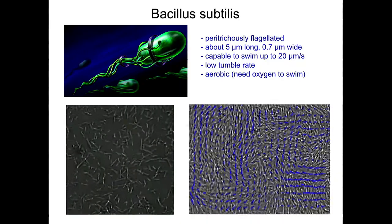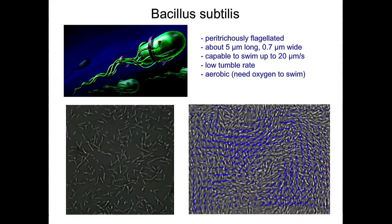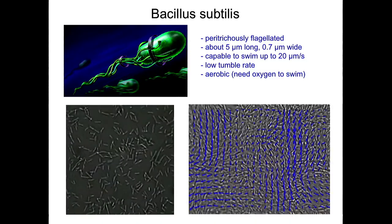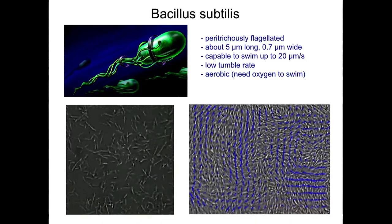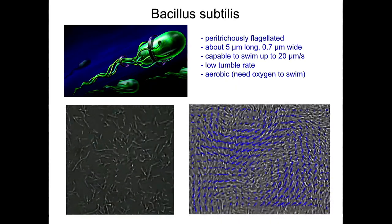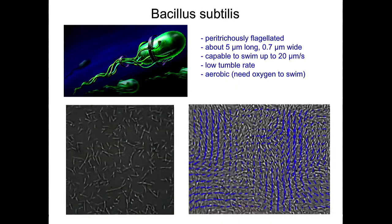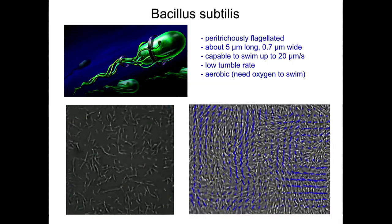And what is interesting is that if you increase the concentration of bacteria, they start to swim collectively, like here, which is manifested by the formation of large-scale vortices, jets, flows, and the correlation length of velocity field is much larger than individual size of single bacteria.